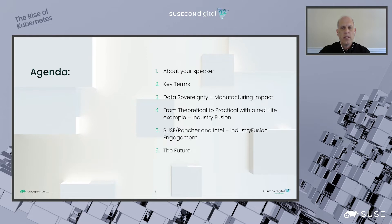To set the stage for the presentation, let's quickly review the agenda. We start with an introduction of your speaker, followed by a discussion of key terms such as data sovereignty, which will frame today's presentation. Since we're discussing this within the context of industrial automation, let's introduce the larger topics of Industry 4.0 and smart manufacturing. Next, we will talk about the impact of data sovereignty in the manufacturing space, and from there we shift to practical application with a real-life example: the Intel-sponsored Industry Fusion Foundation. After the introduction of Industry Fusion, we switch to highlighting how SUSE Rancher and Intel support the concepts of data sovereignty in the manufacturing space, and we continue to leverage the work done by Industry Fusion. Lastly, we look toward the future and discuss potential areas where SUSE and Intel can expand their support of data sovereignty in the Industry 4.0 and smart manufacturing spaces.